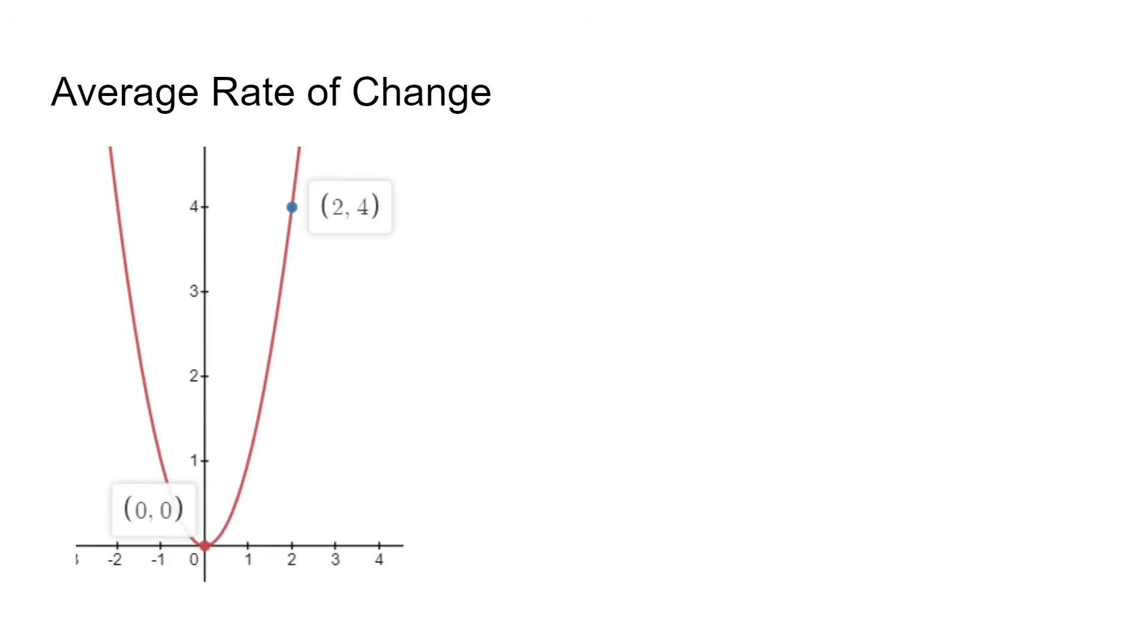They both involve getting the average rate of change. In this example, we can estimate f' of 1 by using the two points around it. We use the slope formula, which is f of b minus f of a over b minus a. We plug in 4 minus 0 over 2 minus 0. We get our answer as 2.